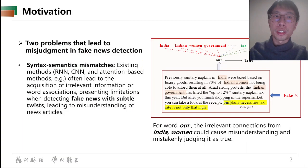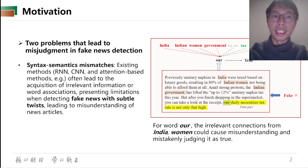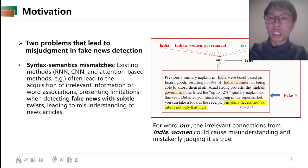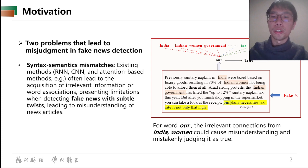We propose our method based on two problems that lead to misjudgment in fake news detection. The first is syntax semantics mismatches. Existing methods, for example RN, CN, and attention-based methods, often lead to the acquisition of irrelevant information or word associations, presenting limitations when detecting fake news with subtle twists, as shown in this figure, leading to misunderstanding of news articles. For the word 'war', the irrelevant connections from India and women could cause misunderstanding and mistakenly judge it as true news.